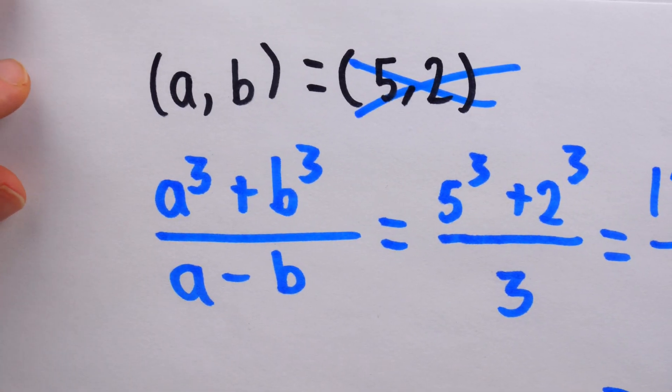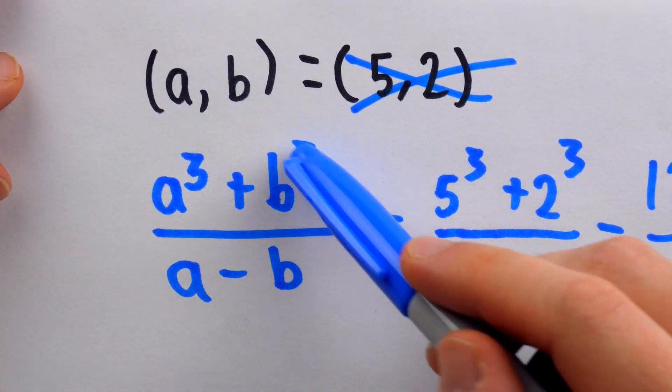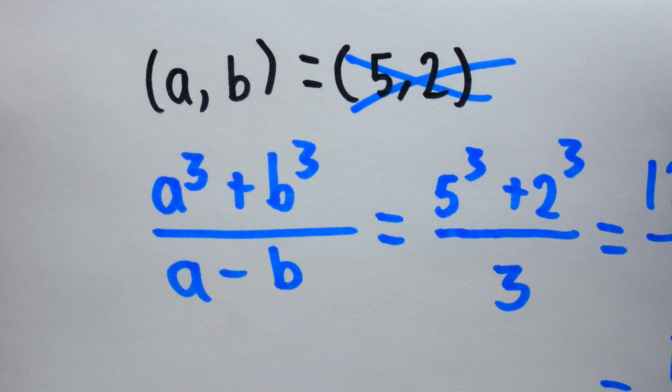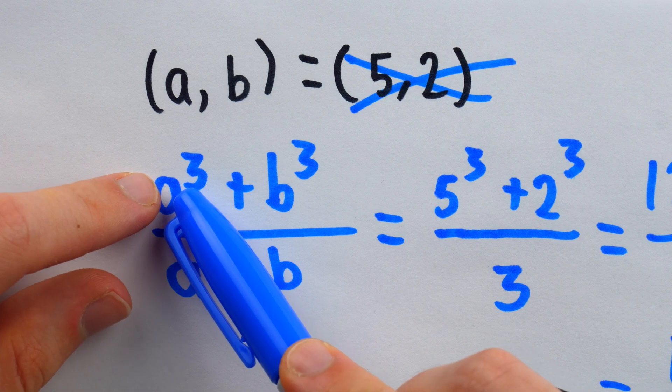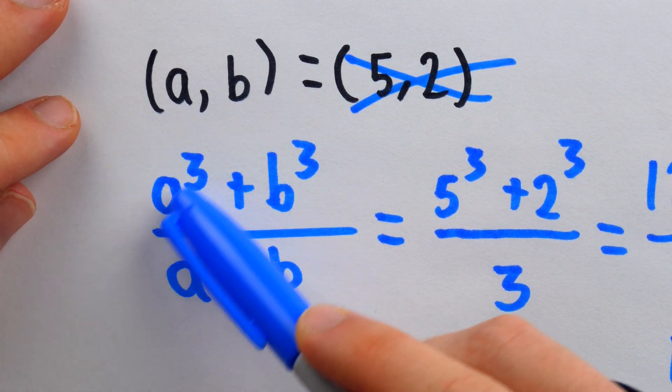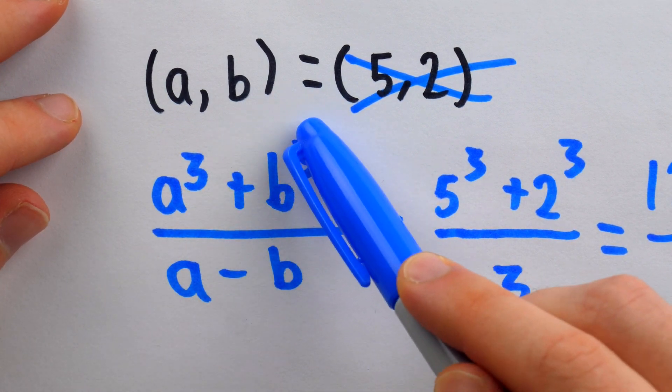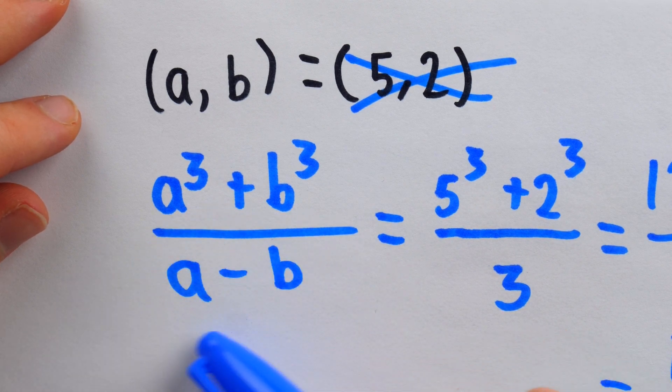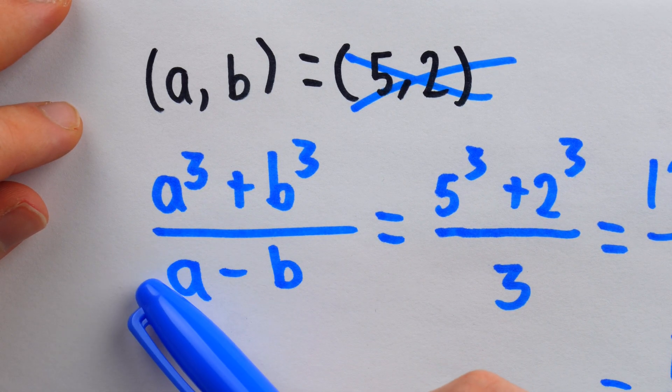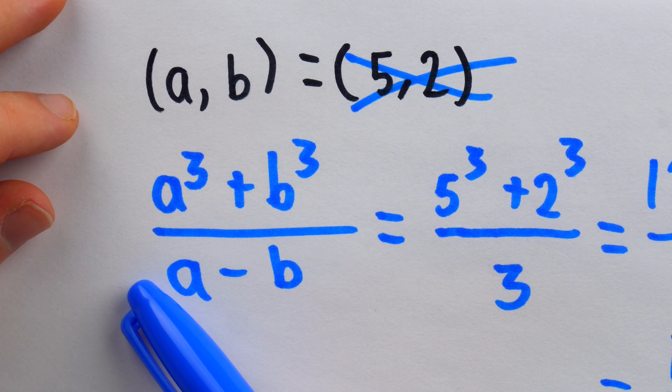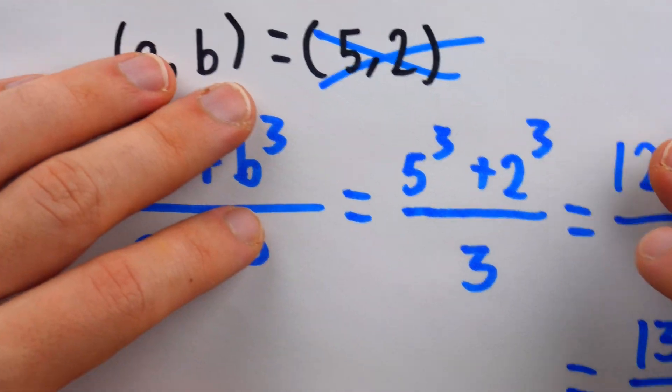So what sorts of pairs should we be plugging in here so that we can even get an integer that might be a square? Well, if we try letting a be a multiple of b, then this would be a multiple of b, and this would be a multiple of b, and the denominator too would be a multiple of b. So we might get some cancellation there that would give us some insight to our solution.